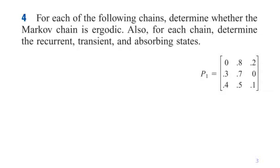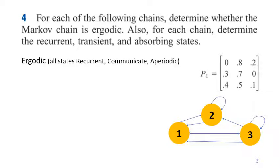Let's start with the first one. We need to determine whether the chain is ergodic and also determine which states are recurrent, transient, and absorbing. I'd like to visualize the probability matrix in terms of a graph. For me, it's easier to see it this way.